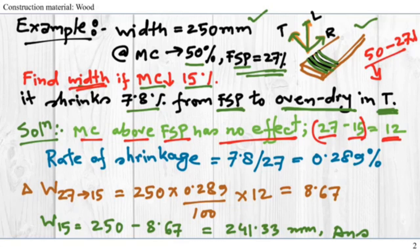From the question, the rate of shrinkage: if it's given as 7.8% dropped from FSP from 27% to zero.